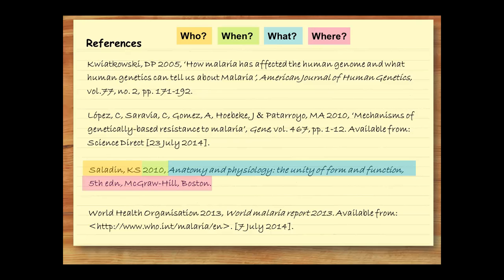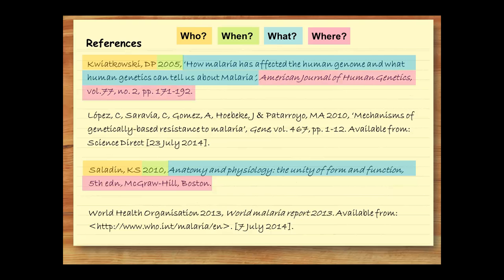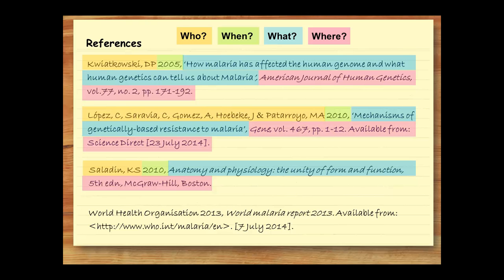The who, when, what, where method works for journal articles too. A print journal article reference starts with who, when, and what, then tells us where to find the article: which journal, volume, issue number if applicable, and pages. An electronic journal article provides the same who, when, what information, but the where also tells us what database to find the article in and when you last looked at it. If the journal wasn't hosted on a database, you'd include the URL instead, just like you do for a website listing.